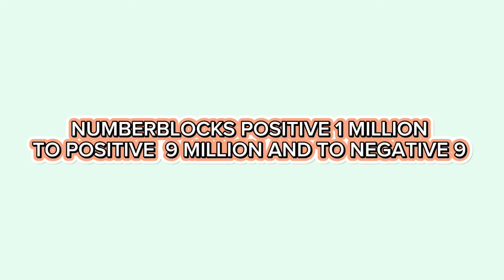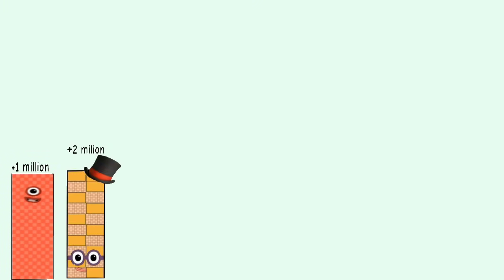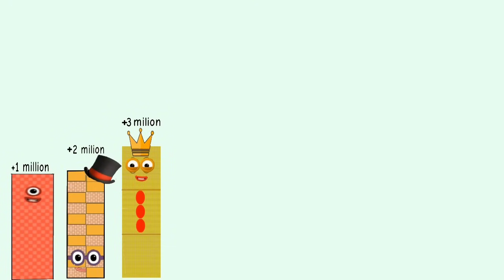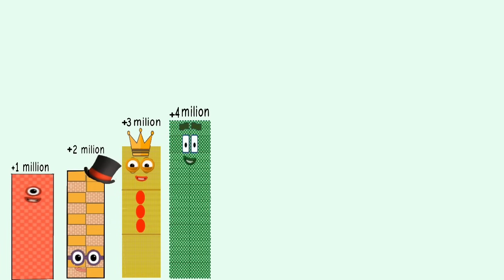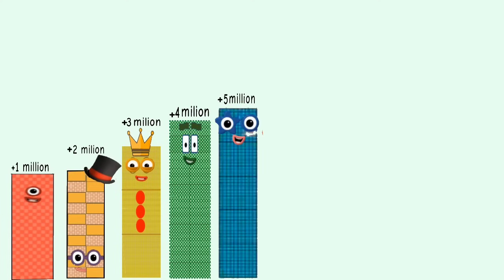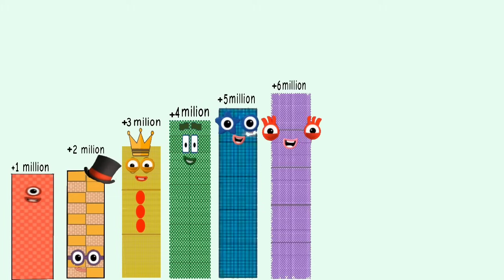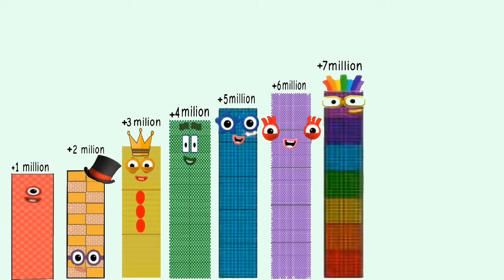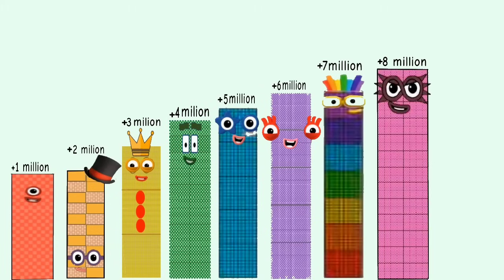Number blocks positive 1 million to positive 9 million and back. Positive 1 million. Positive 2 million. Positive 3 million. Positive 4 million. Positive 5 million. Positive 6 million. Positive 7 million. Positive 8 million.